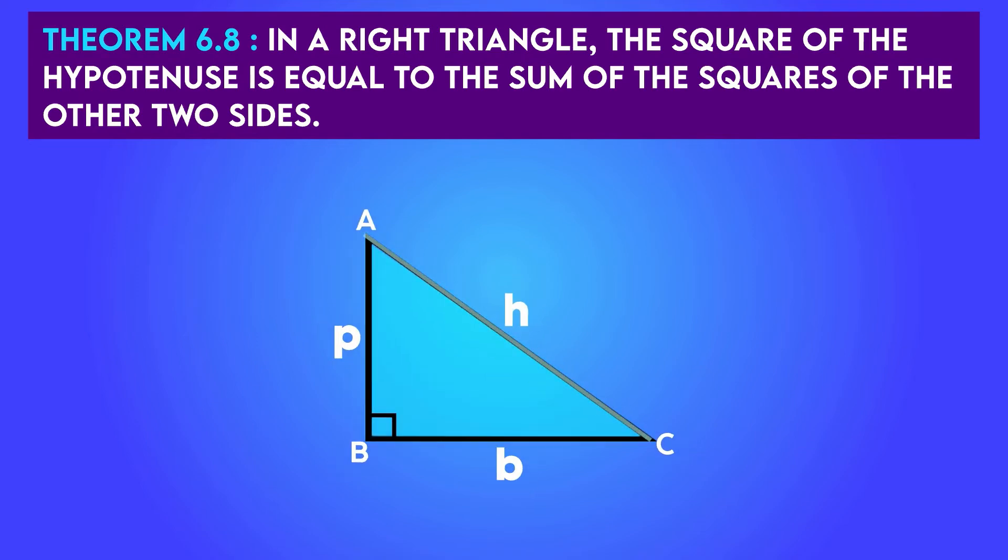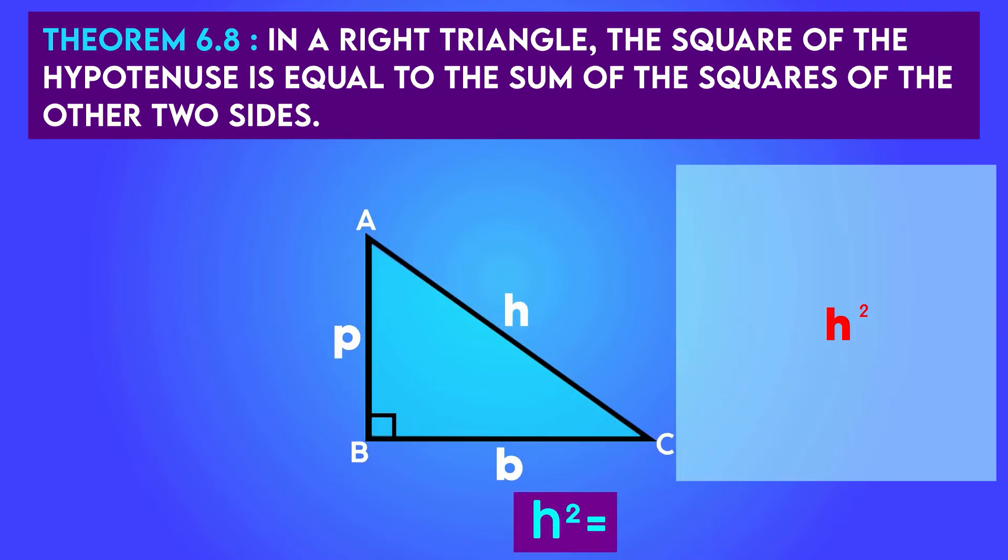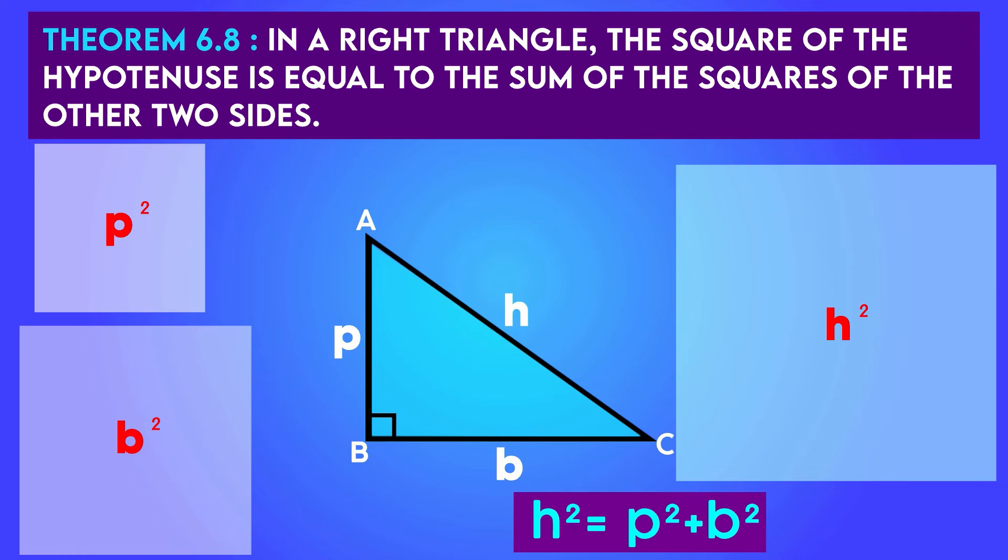Theorem 6.8: In a right triangle, the square of the hypotenuse is equal to the sum of the squares of the other two sides. This is known as the Pythagoras theorem.